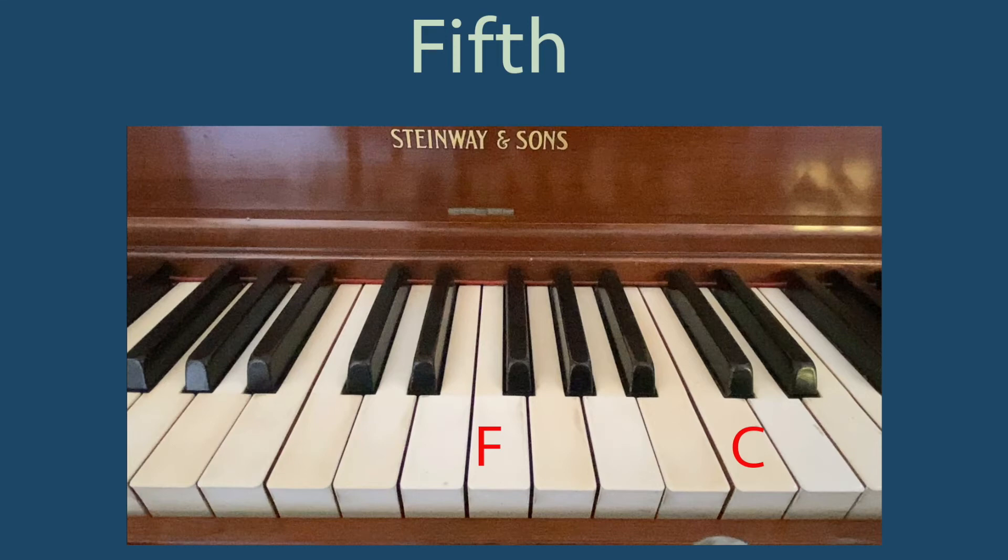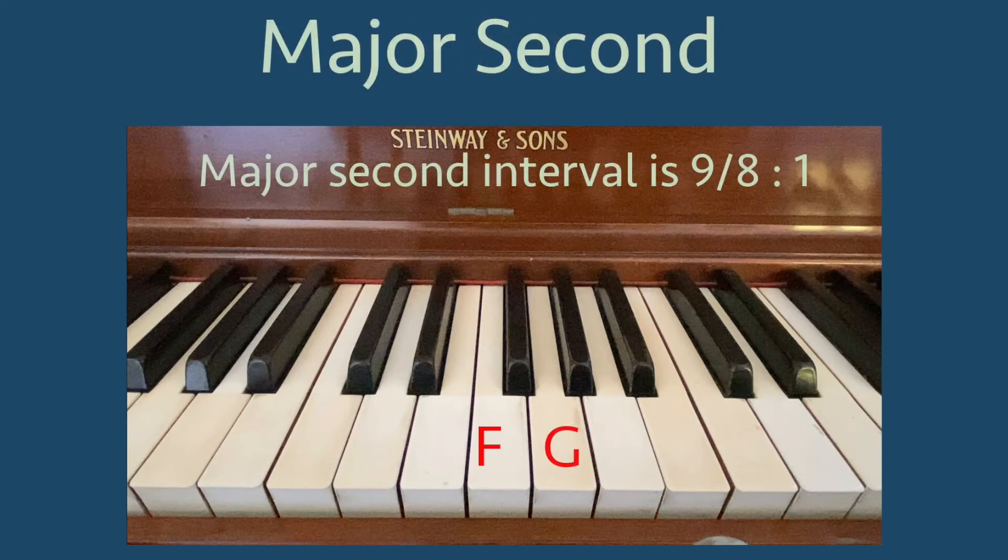We have another perfect 5th from F to the higher C, and a new interval from F to G, which we call the major 2nd. The ratio for this interval is 3 halves to 4 thirds, or simply 9 eighths to 1. This means if I take the frequency for F and multiply it by 9 eighths, then I get the frequency for G.